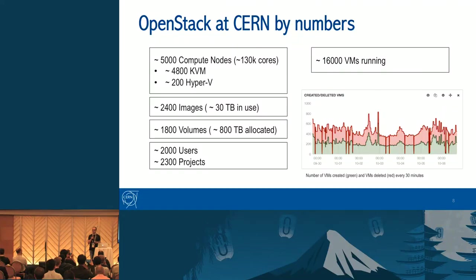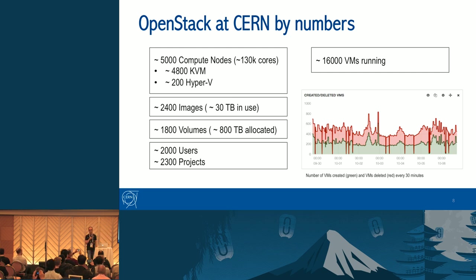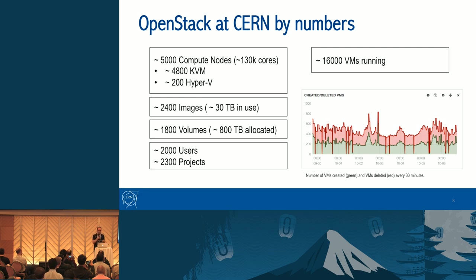How big is the CERN cloud infrastructure? Today we have 5,000 compute nodes — roughly 130,000 cores — and we are running 16,000 virtual machines. It's not a lot of VMs compared to the number of cores because we have very large virtual machines for data analysis. Unfortunately, our users don't have the illusion of unlimited resources like in public clouds — for new VMs to be created, others need to be deleted. You can see in this graph the creation rate in green and deletion rate in red — they basically match. We are almost full.